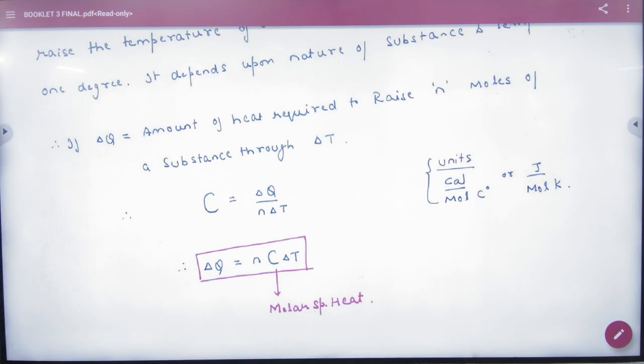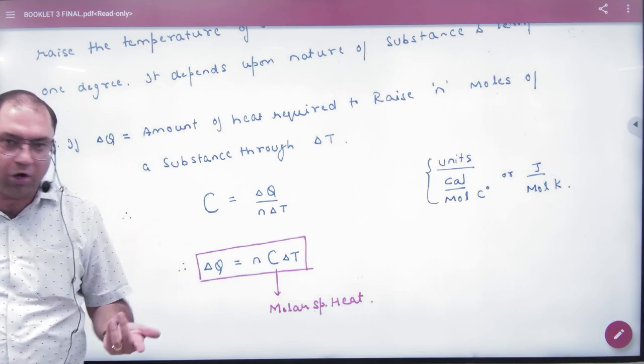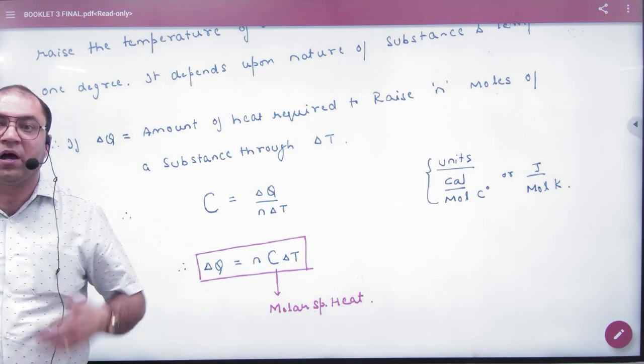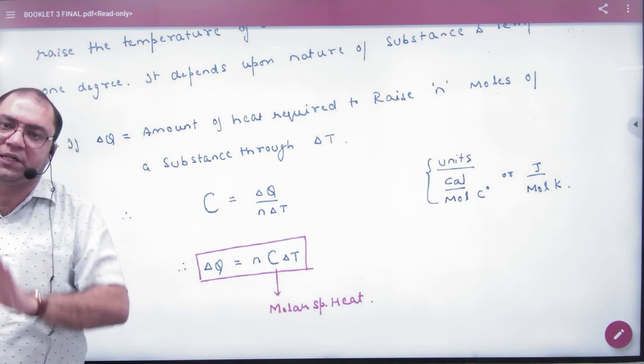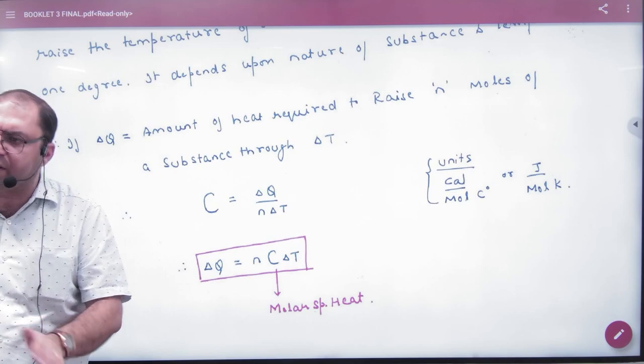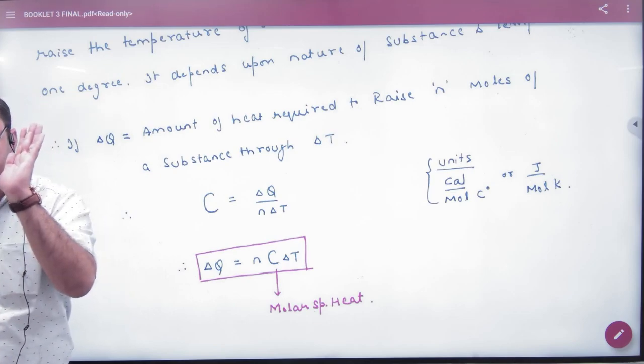So which question will give mass, it will give you specific heat, small c. But if it's giving moles for gas, then it will give you molar specific heat, big C. So the question will automatically give you the requirement. But you are getting the difference here. Okay?